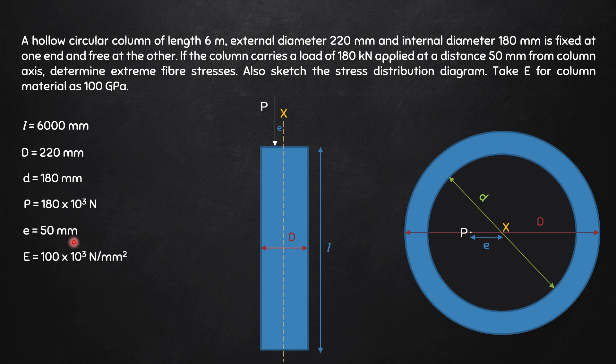Capital E, the Young's modulus, is given as 100 GPa. Since 1 gigapascal equals 10³ N/mm², the value of capital E is written as 100×10³ N/mm².